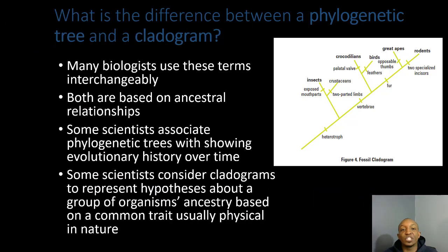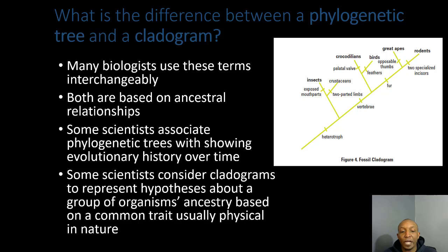What is the difference between a phylogenetic tree and a cladogram? Many biologists use the terms interchangeably because both are based on ancestral relationships. Some scientists associate phylogenetic trees with showing evolutionary history over time, while some scientists consider cladograms to represent hypotheses about a group of organisms' ancestry based on a common — usually physical — trait.